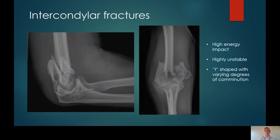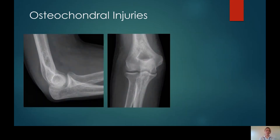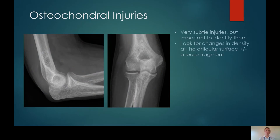A much more obvious injury is intercondylar fractures. These are very unstable and form a Y-shaped fracture configuration, generally caused by high energy impact forces. Osteochondral injuries are very important injuries to be able to appreciate. When looking at these X-rays, the most obvious thing you can see is a pronounced joint effusion, so already you should be thinking that there is an injury present.